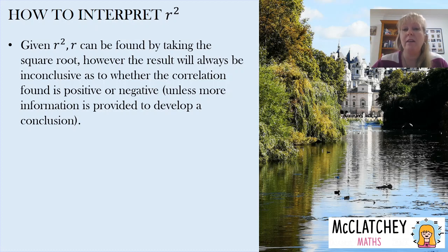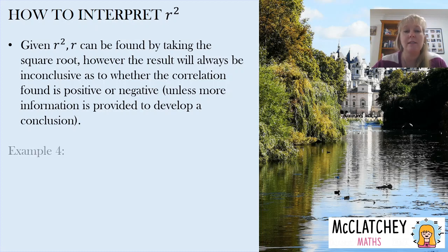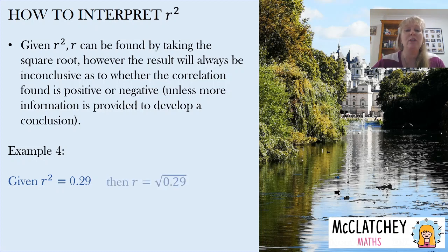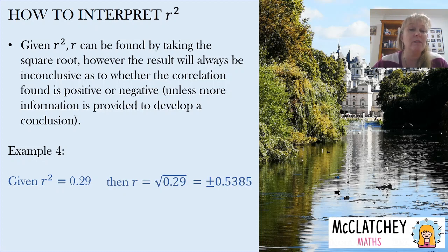If I know R squared, I can find R by taking the square root. However, the result will be inconclusive as to whether the correlation is positive or negative unless I'm given more information about the context. For example, if R squared is 0.29, then R equals 0.5385, but it could be positive or negative. Sometimes you might be given a context such as height versus weight, where one would generally conclude that as height increases, weight increases, so you could conclude there was positive association.